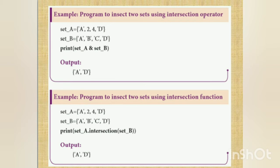Using the intersection() function for the same program: set_A = {'A', 2, 4, 'D'}, set_B = {'A', 'B', 'C', 'D'}. Then print(set_A.intersection(set_B)). The syntax is first_set.intersection(second_set). The output will be {'A', 'D'}.